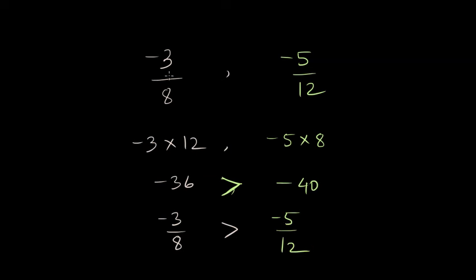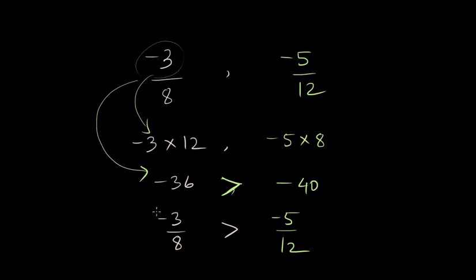Remember: you should write the multiplication below the fraction whose numerator is involved in that multiplication. Otherwise there is a chance you will switch the places and get the wrong answer. And this is how we compare two fractions using cross multiplication.